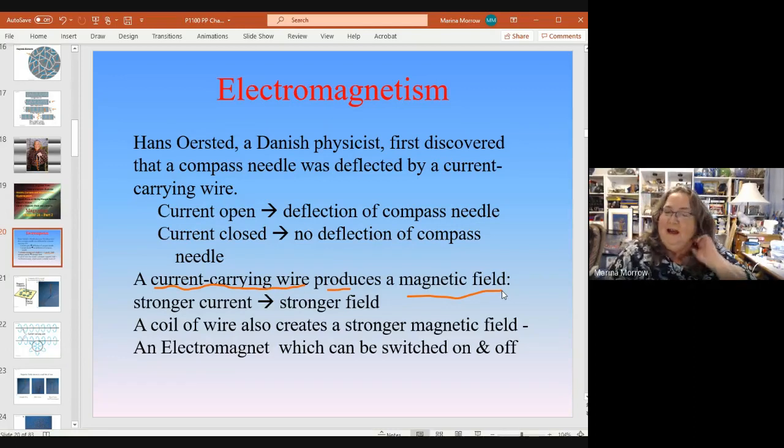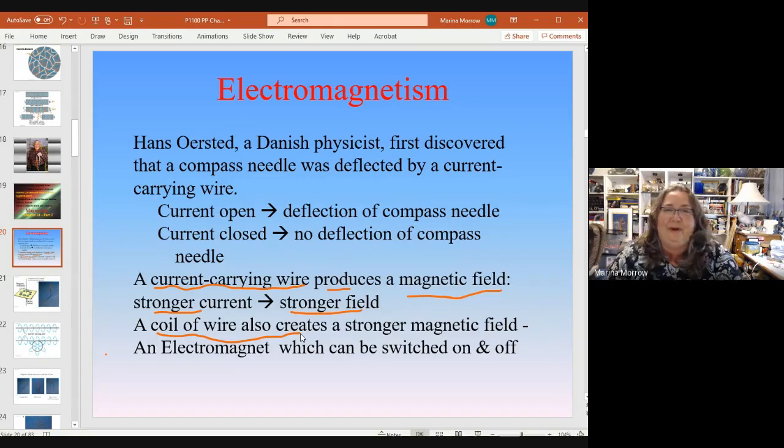A stronger current creates a stronger magnetic field. If you have a coil, that can create an even stronger magnetic field. Make your wire into a coil and put current through it. This creates what's called an electromagnet. One of the big advantages of electromagnets is they can be switched on and off. They're very easy to make and you can make them very strong, stronger than a normal magnetic material.